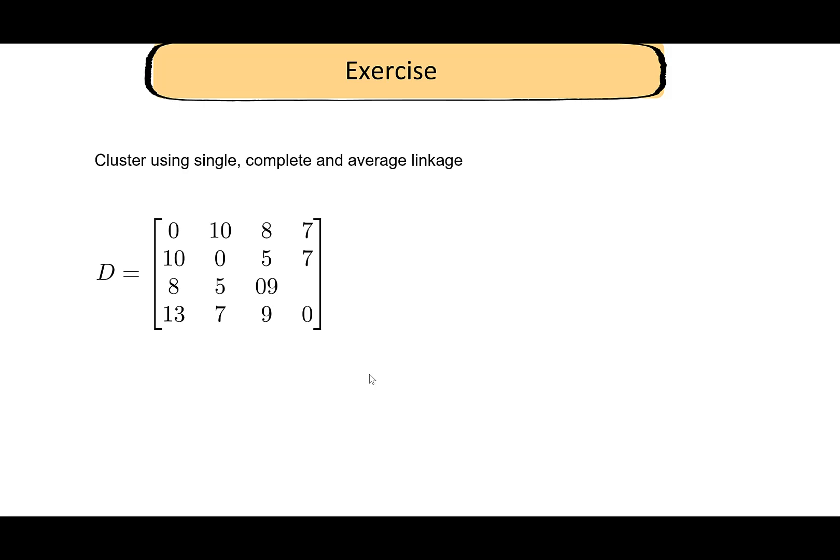Here is a practice example — a distance matrix I've made up (note: the nine is in the wrong position in the slide; it should be shifted one cell). It's a good idea to practice executing all three methods — single linkage, complete linkage, and average linkage — on this matrix. It only has four elements, so average linkage is not too bad. Try all three methods and practice them on this distance matrix.